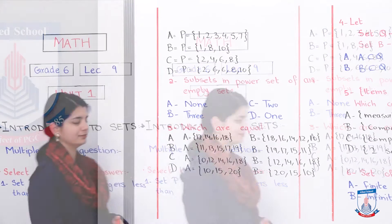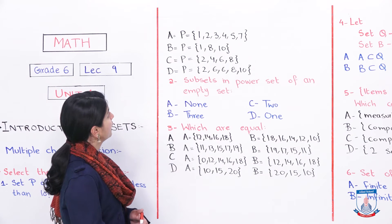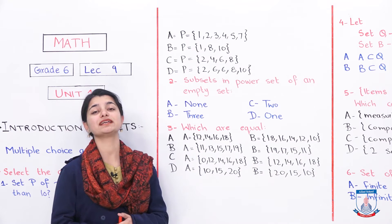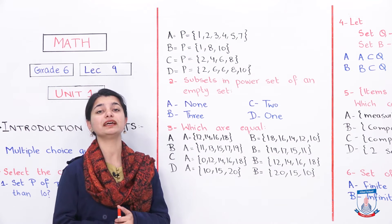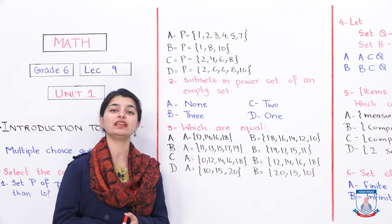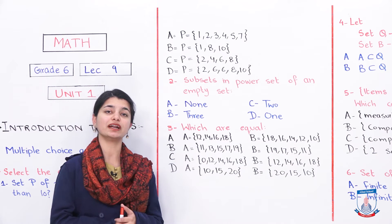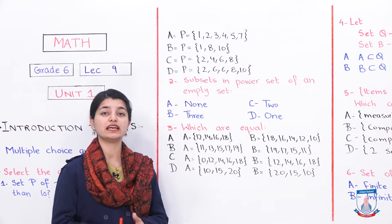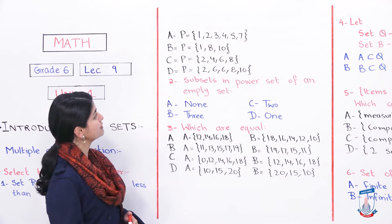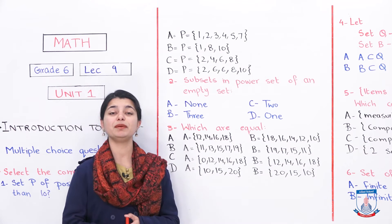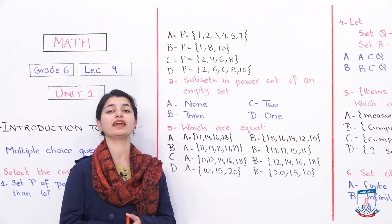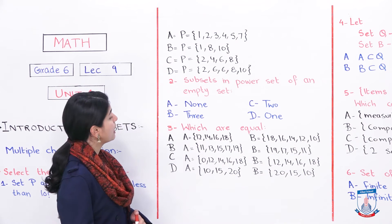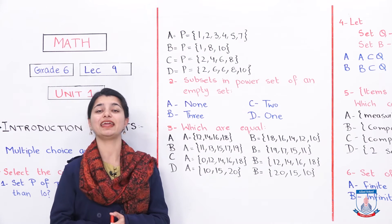Option A is P = {1, 2, 3, 4, 5, 7} — this is completely incorrect because 1, 3, 5, and 7 are not even numbers, so this set is cancelled. Option B is {1, 8, 10} — the same issue: 8 and 10 are even but 1 is not an even integer, so this option is also cancelled.